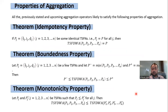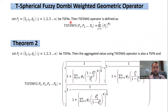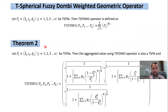Every aggregation operator must satisfy three properties, and we claim the operators discussed satisfy idempotency, boundedness, and monotonicity. We also present T-spherical fuzzy Dombi weighted geometric operators, based on the power operation and Dombi product. For a collection of T-spherical fuzzy numbers Pj, the weighted geometric operator is given by a defined expression, and applying these operations yields Theorem 2, which is also utilized in the decision-making algorithm and examples.